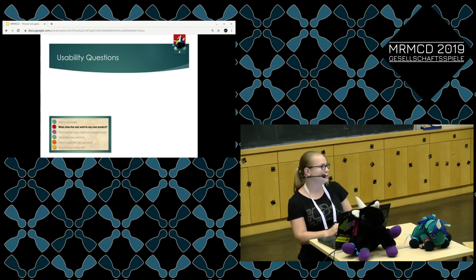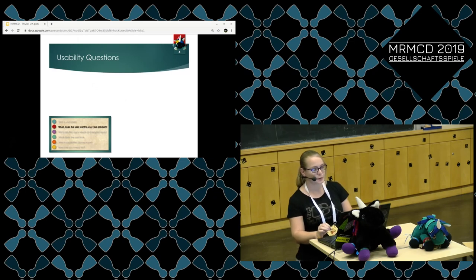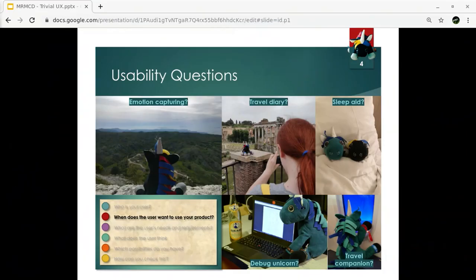So the next point, if we know a little bit about our user, is when is our user going to use the product? So in our case, there could be several things. For example, emotion capturing, a travel diary, sleeping aid could also be a possible use case, a debug unicorn, or a travel companion. So there were several situations in which you can use a product. The more you know about those situations, the better you can adjust your product to these situations. Because how do you want to know what a user is going to do with a product if you don't know when he's going to use it?